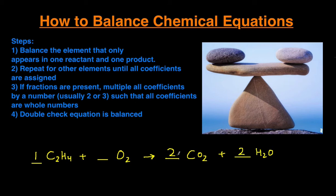Finally, I can balance the number of oxygens. Let's see how many oxygens we have in total on the product side. We have four oxygens from the CO2 and then we have two oxygens from the H2O. So in total, that gives us six oxygens. We have two oxygens on the left hand side, which means we're going to need a coefficient of three right here.